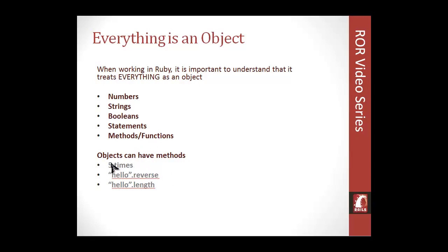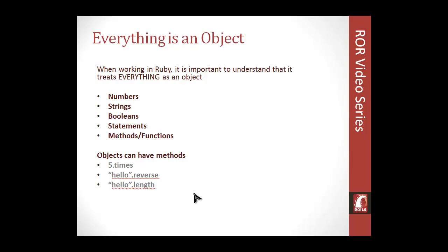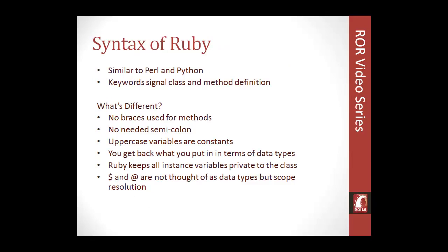Here's an example of calling a method from an object using Ruby's syntax. We have 5.times — the object is 5 and the method is times, which will do something five times. We also have "hello".reverse, which will reverse the spelling of hello. And "hello".length will give us the length of the word, which would be 5. So hello.length equals 5.